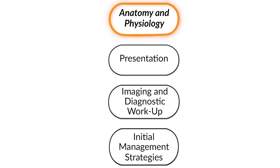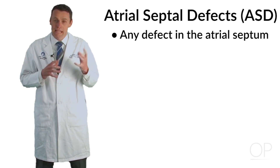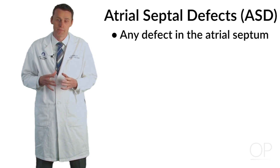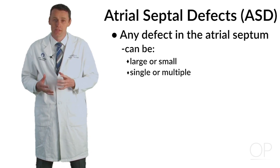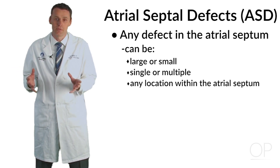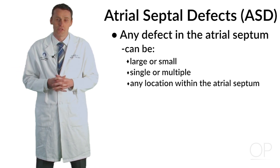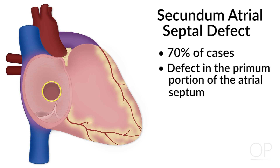Anatomy and Physiology. Atrial Septal Defects are simply any defect in the atrial septum. They can be large, small, single, or multiple. The three broad categories are: Secundum Atrial Septal Defects, which account for about 70% of the defects we see, and those are actually a defect in the primum portion of the septum from an embryologic standpoint.